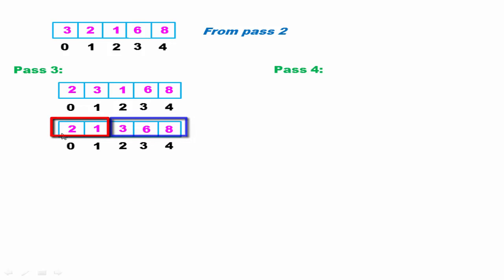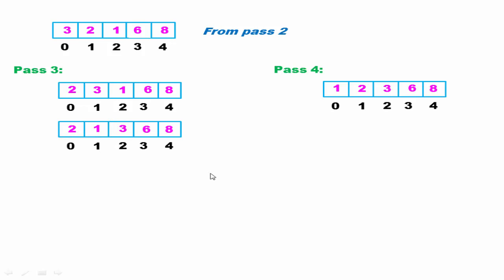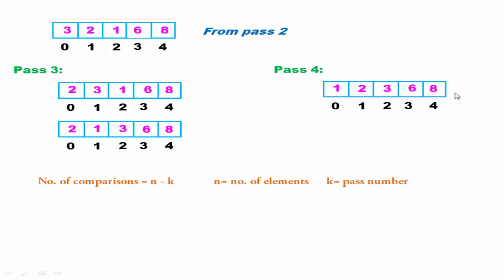In pass 4, we just compare the remaining two elements. 2 is greater than 1, so we swap these two elements. After swapping, we get the final result. At the end of pass 4, the array is fully sorted.